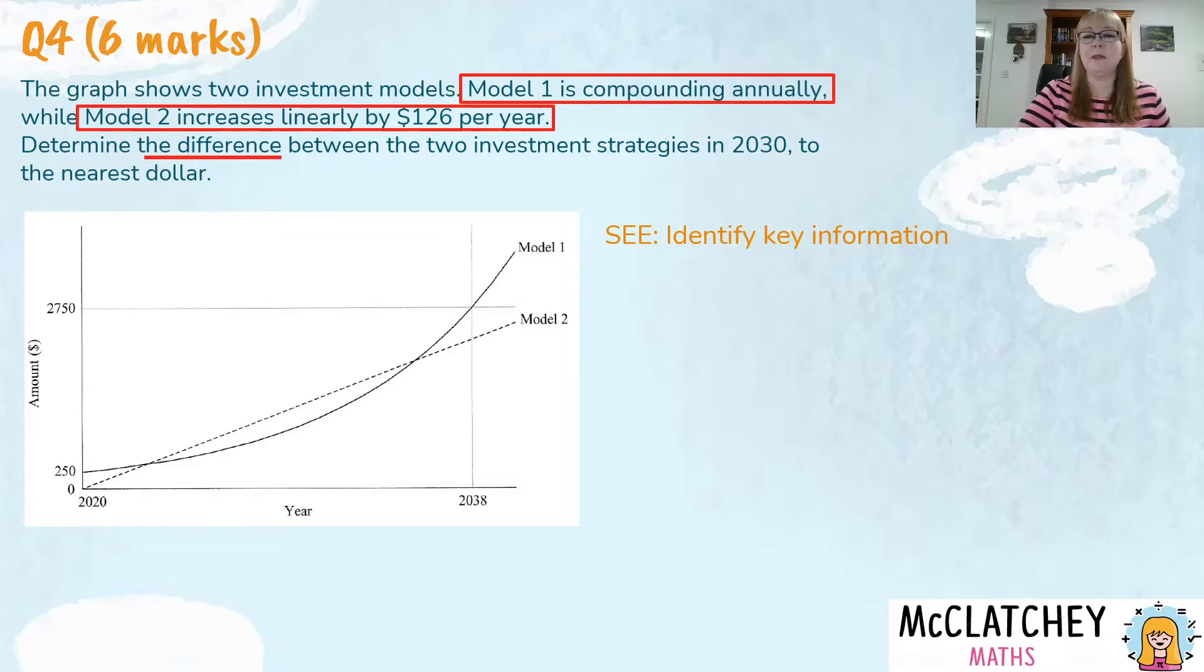So first we've already mentioned that first piece of key information is that it's compounding annually. So we know we're going to need a compound interest formula of some kind. Second one, model two is linearly and basically it's straight line growth same amount of interest every year use simple interest. That's our clues there and we need to find the difference. So what we're going to need to do is look out to 2030 which isn't marked on the graph.